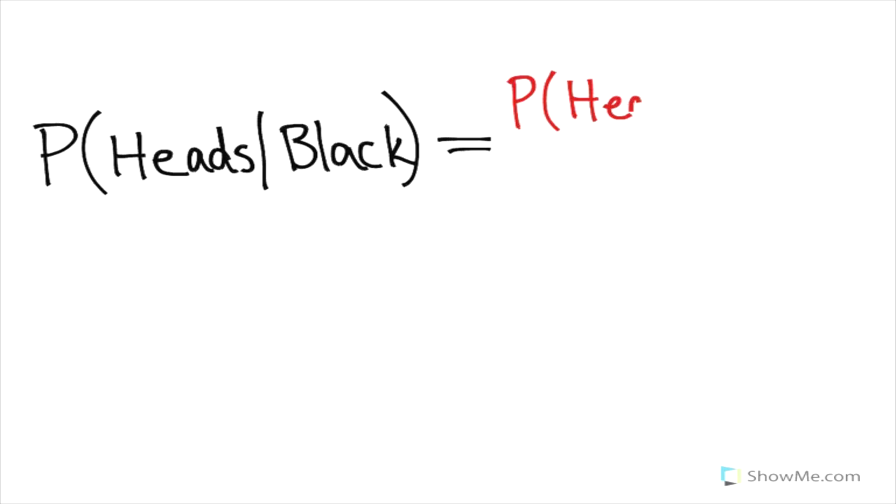So our first example is calculating the conditional probability of heads given a black card. What that means is if you have already drawn a black card from the deck, what's the probability that you flip the coin and land heads. In our formula, this is the probability of heads and a black card divided by the probability of a black card.